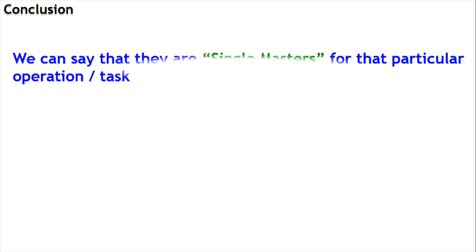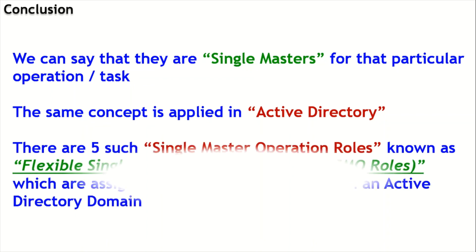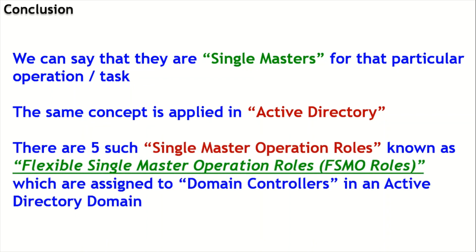We can say that there are single masters for each particular task or operation. The same concept is applied in the world of Active Directory — there are five such single master operation roles, known as Flexible Single Master Operation roles, which are assigned to domain controllers in the Active Directory domain.